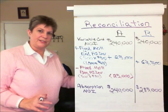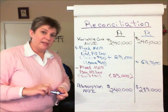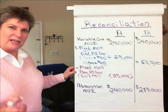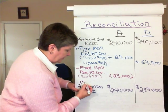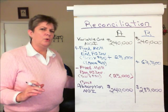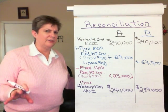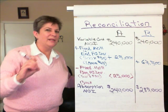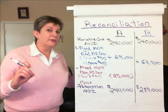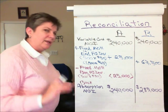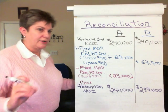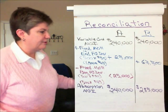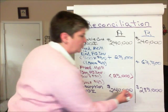We'll add that $67,500 to the variable costing net income, and then we're going to subtract the fixed overhead that was in beginning finished goods inventory — 500 units. We're assuming that Scenario B is a whole different scenario, not just one month different from A. So the fixed overhead in beginning inventory on a per-unit basis is assumed to be the same as in ending inventory — the same $45 per unit. So 500 units times $45 is $22,500, and we'll subtract that.